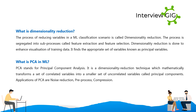What is dimensionality reduction? The process of reducing variables in an ML classification scenario is called dimensionality reduction. It is segregated into sub-processes called feature extraction and feature selection. Dimensionality reduction is done to enhance visualization of training data and to find the appropriate set of variables known as principal variables.